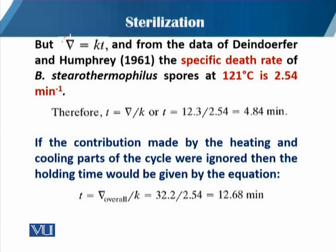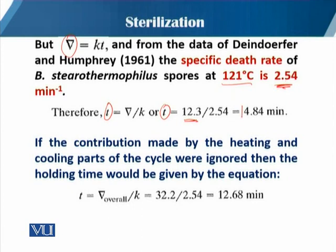As we know, the del factor is equal to k times t. From the data of Deindofer and Humphrey in 1961, the specific death rate of Bacillus stearothermophilus spores at 121 degrees Celsius is 2.54 per minute. Using the equation t equals del factor divided by the specific death rate, the holding time is 12.3 divided by 2.54, which gives 4.84 minutes. This is the time required for the holding time.